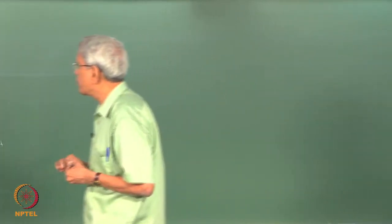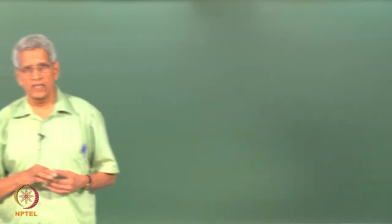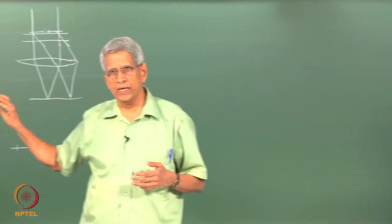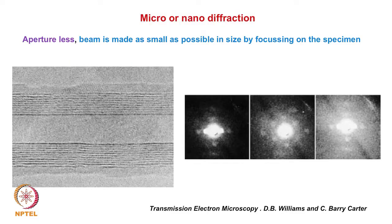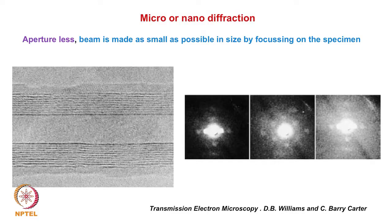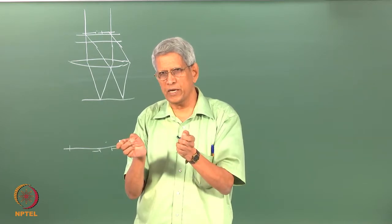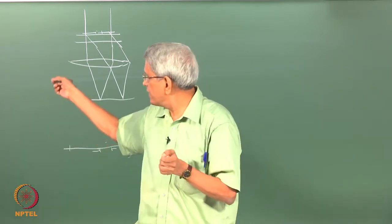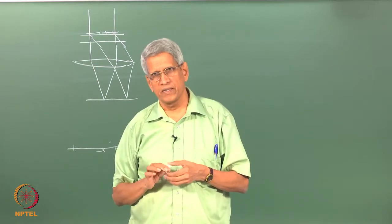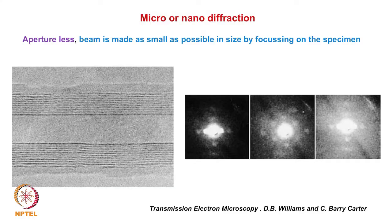This example from the literature is taken from a carbon nanotube. From different regions of the nanotube, a very small beam can be placed — no aperture is used, the beam itself has been made small so only from that region the diffraction comes. When the beam is made very small and falls on a small region, there is also a spread of spots, which is what characterizes nano diffraction.